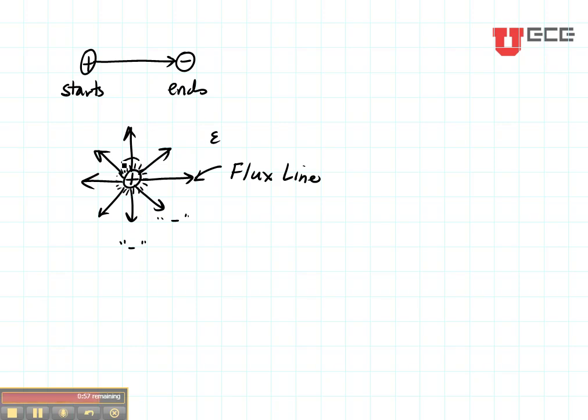So right here, close to that charge, the electric flux density is high. And as we get further away from the charge, the electric flux density is low. So D is a flux line and then E is the actual force that would be felt as a result of the flux line and also the material.